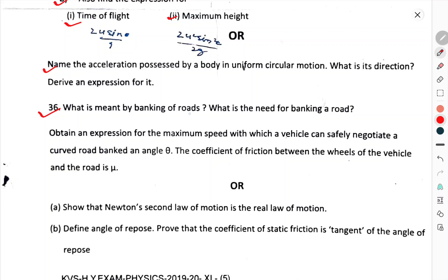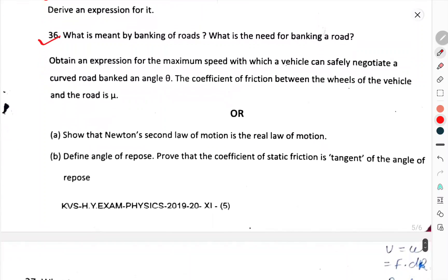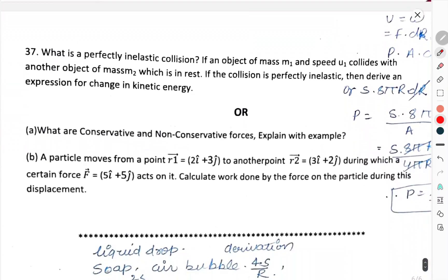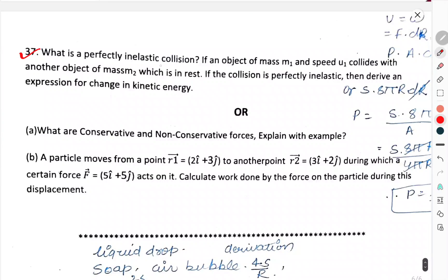Question number 36. What is meant by banking of road? What is the need of banking of road? Obtain an expression for maximum speed with which vehicles safely negotiate a curved road banked at an angle theta. The coefficient of friction between the wheels of the vehicle and the road is mu. Or show that the Newton's second law of motion is the real law of motion. Define the angle of repose. Prove that the coefficient of static friction equals tangent of the angle of repose.